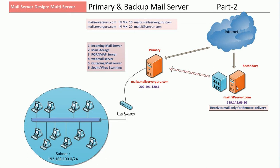The ISP provides this service with two types of configuration. Either it can store email in its mail server queue — this service is almost free — or it gives us a catch-all email address at their server where all our incoming mail is saved to an inbox. This is permanent keeping by the ISP server. Then our primary server will pull all email from it and deliver to its users. This is how we implement primary and backup mail server in a corporate environment.